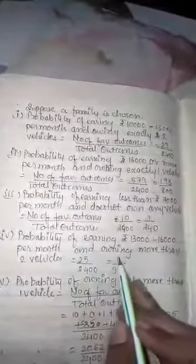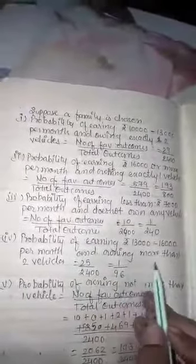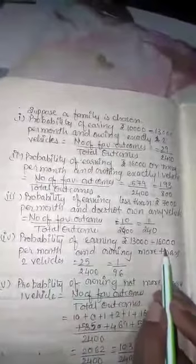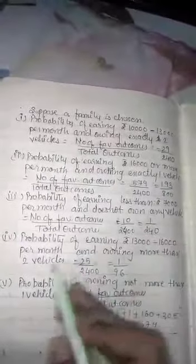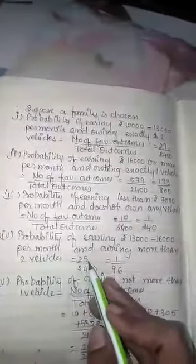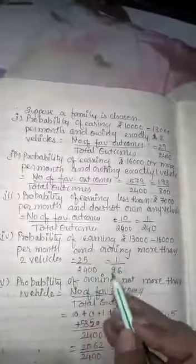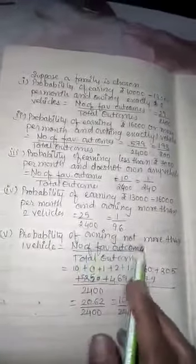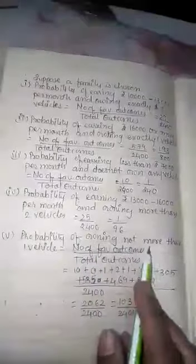Probability of earning 13,000 to 16,000 per month and owning more than two vehicles. From the table, families in the 13,000 to 16,000 income group with more than two vehicles is 25. So P = 25/2400. Cutting by 25, we get 1/96.